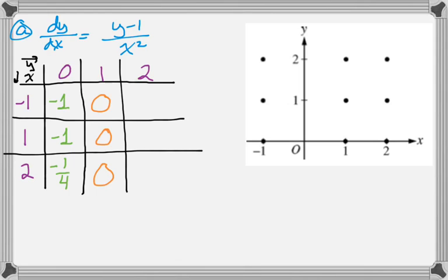If we plug in 2 for y, we have 1 as our numerator. So it's 1 over 1, 1 over 1, and 1 over 4.